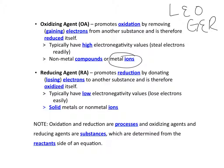Reducing agents, or RAs, promote reduction of another compound by donating or losing electrons to another substance, and are therefore oxidized themselves. An oxidizing agent undergoes reduction, and a reducing agent undergoes oxidation — they're opposites. A reducing agent typically has low electronegativity values, so it loses electrons very easily, and they are typically solid metals or non-metal ions. Note that oxidation and reduction are processes, whereas oxidizing agents and reducing agents are substances identified from the reactant side of an equation.